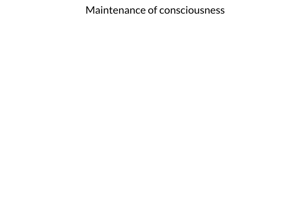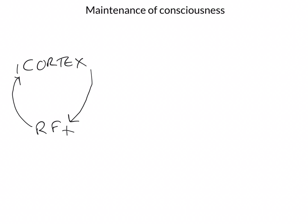Consciousness depends upon the integrity of two important structures and the connections between them. In order to be conscious, we need a functioning cerebral cortex, and in addition to this, we need a functioning reticular formation. We need these two structures to be working in order to remain conscious. What we have are reciprocal connections between the cortex and the reticular formation, and these reciprocal connections are themselves excitatory — the cortex is able to excite the reticular formation and the reticular formation is able to excite the cortex.